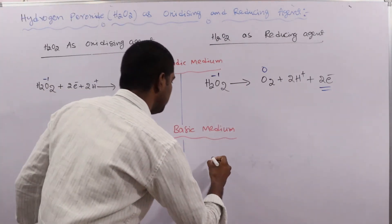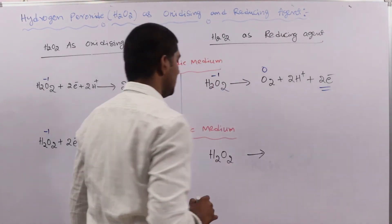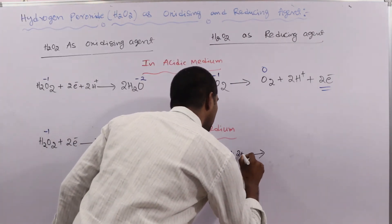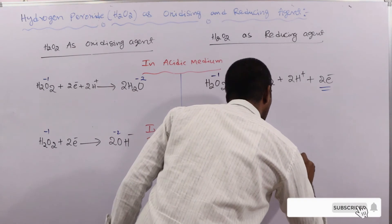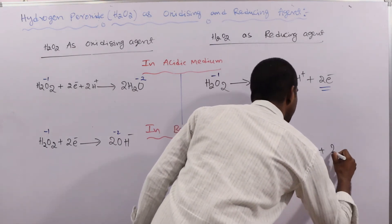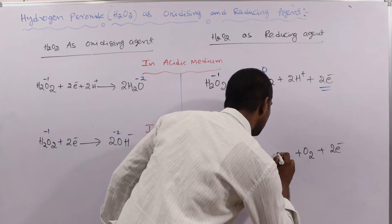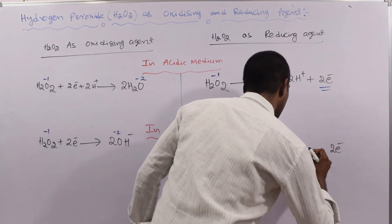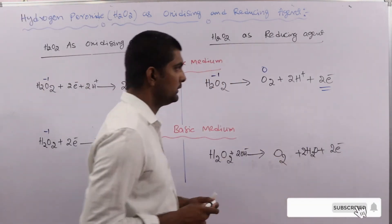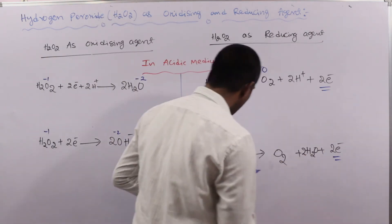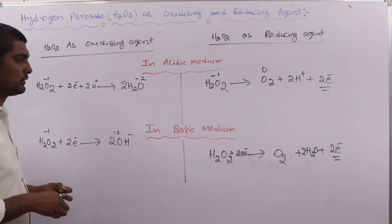In the basic medium, when H2O2 acts as a reducing agent: H2O2 + 2OH⁻ gives O2 + 2H2O + 2e⁻. Here also two electrons are released; we have two oxygens, each oxygen releasing one electron, giving overall two electrons. The oxidation state of oxygen goes from −1 in H2O2 to 0 in O2, same story as in the acidic medium.